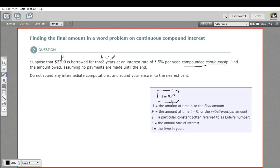So our time period here is three. The interest rate on that loan was 3.5 percent, so our rate is 0.035. And this is compounded continuously. So it says find the amount owed at the end of that three years.